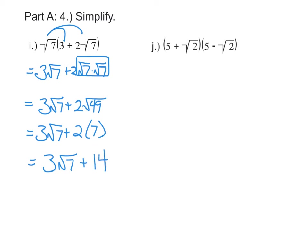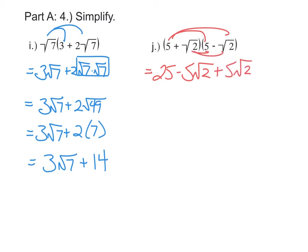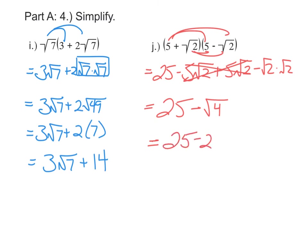If we have two binomials, we're going to have to FOIL them. We'll distribute the five first, giving us twenty-five minus five root two. Then we'll distribute the square root of two, giving plus five square root of two minus square root of two times square root of two. The two middle terms cancel each other out, and we'll have twenty-five minus the square root of four. The square root of four is two, and twenty-five minus two makes twenty-three.